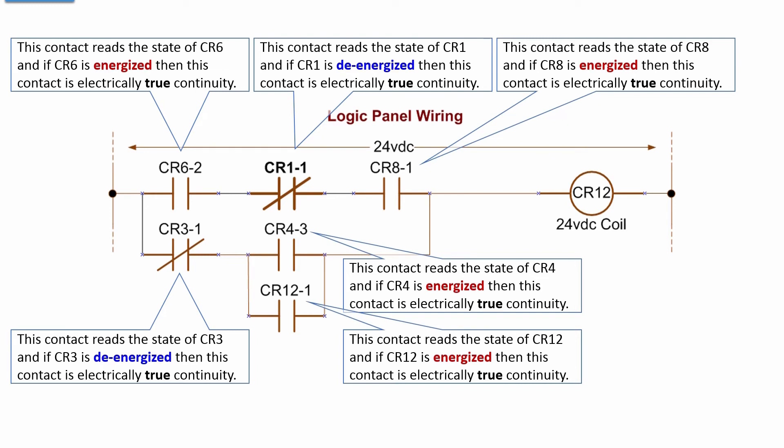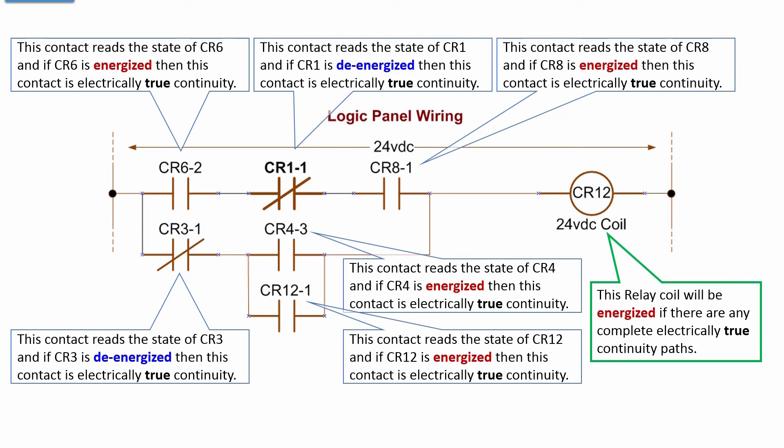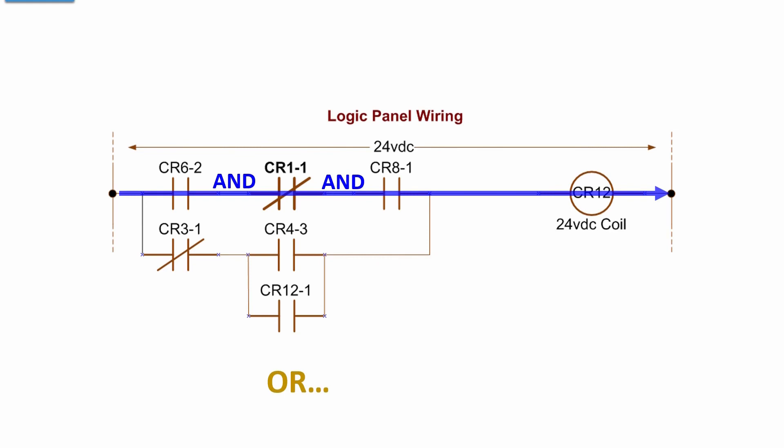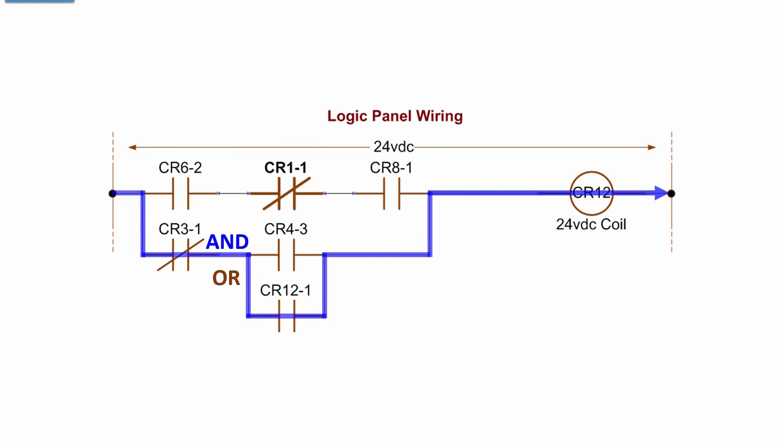Any logically true path through this set of contacts will energize CR12. How many possible true paths of electrical continuity do we have? Here's the first: if CR6 is energized, and CR1 is de-energized, and CR8 is energized, then energize CR12. Or if CR3 is de-energized (off) and CR4 is energized, then energize CR12. Or if CR3 is de-energized and CR12 is already energized, then keep CR12 energized — that's the seal-in path.